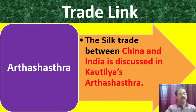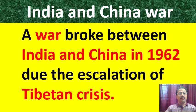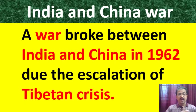Kautilya's Artha Shastra mentions the silk route. The Panchashila principles, signed in 1954, strengthened the relationship between India and China. These included mutual respect for each other's territorial integrity and sovereignty, mutual non-aggression, and mutual non-interference in each other's political affairs. These things strengthened the relationship of India with China.